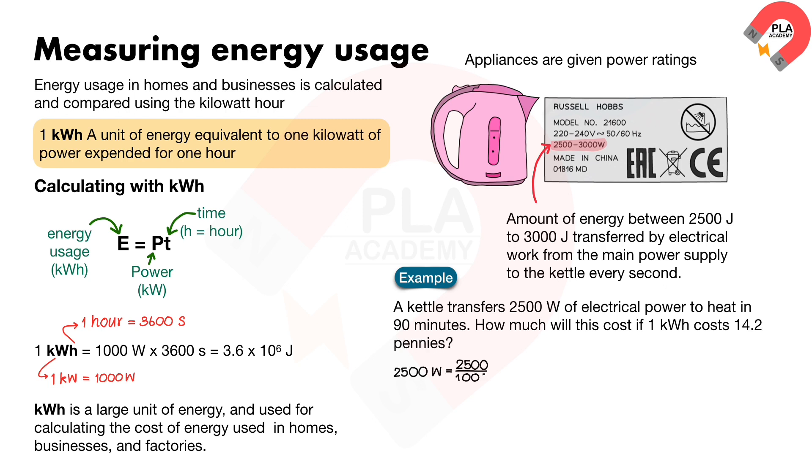Convert from twenty-five hundred watts to kilowatts. The result is two point five kilowatt. Convert from ninety minutes to hours. The result is one point five hours. Calculate the energy used in kilowatt-hours. The result is three point seven five kilowatt-hour. Then calculate the price. The result is fifty-three point two five pennies.